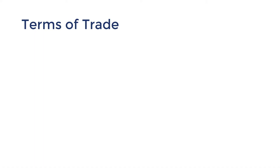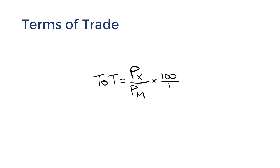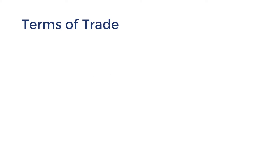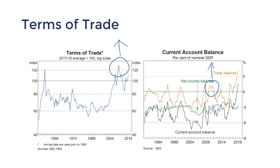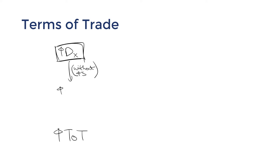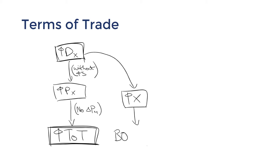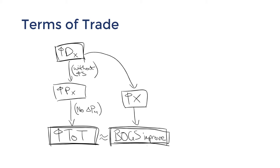Terms of trade is also explored as a cyclical influence on BOGS. As a quick recap, the terms of trade measures the movement of export prices relative to import prices. In recent years, Australia's terms of trade has been mostly driven by demand for Australian mining resources. When there is high demand, commodity prices increase, driving up export prices, resulting in an improved terms of trade. It's no coincidence that these terms of trade trends correlate with BOGS — they're both driven by export demand.